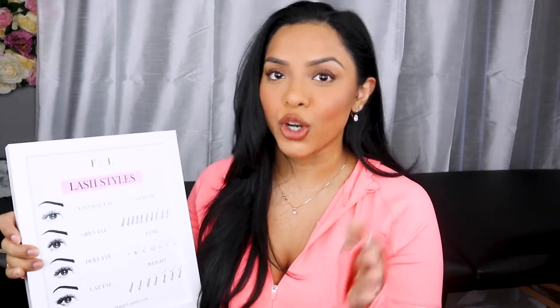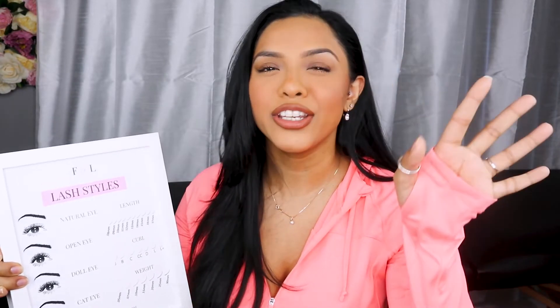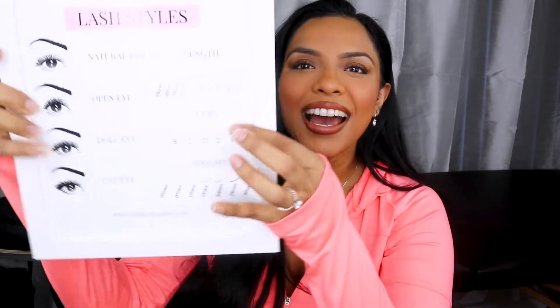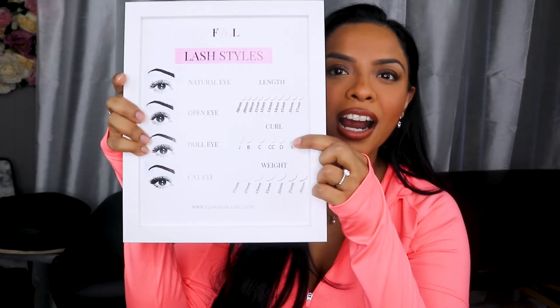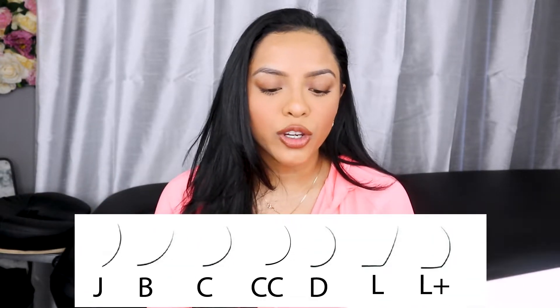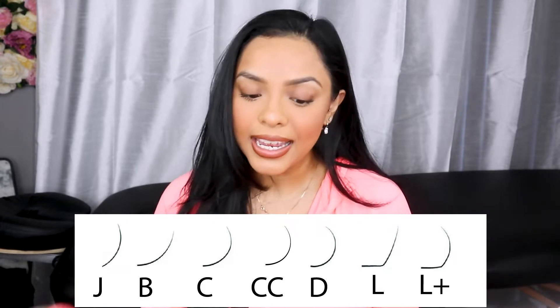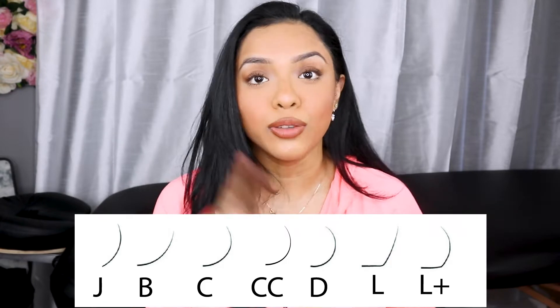Speaking of our lash chart, this is the perfect way to describe and show lash curls, because the actual lashes are so small it's hard to see the difference. I'm going to pop it up on screen so you can see it properly. You can see all the curls: J, B, C, CC, D, DD, L, L+, and M.